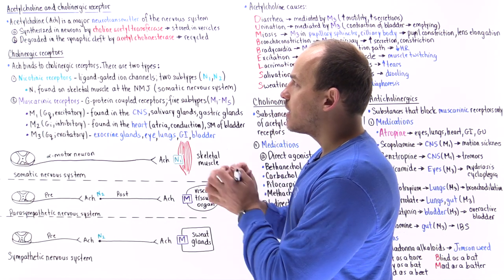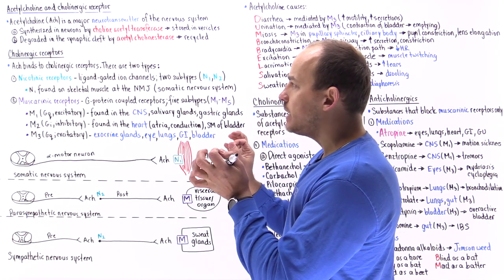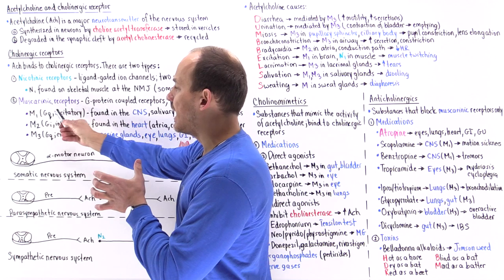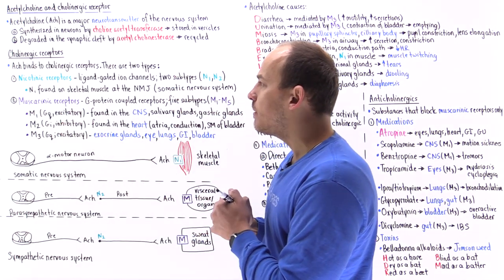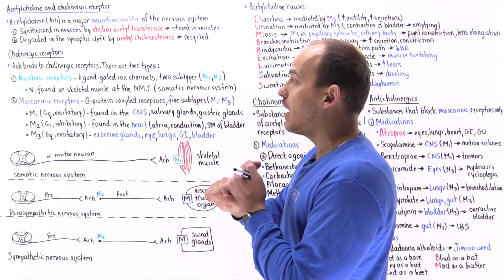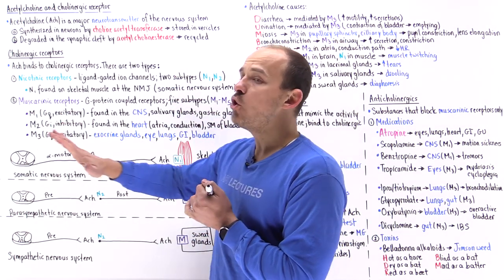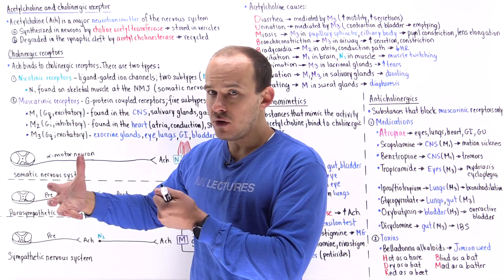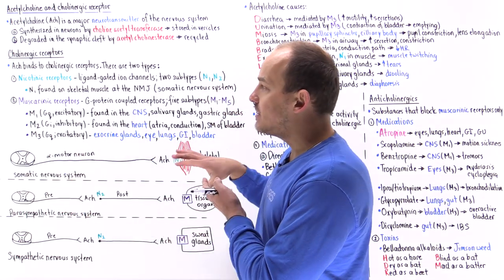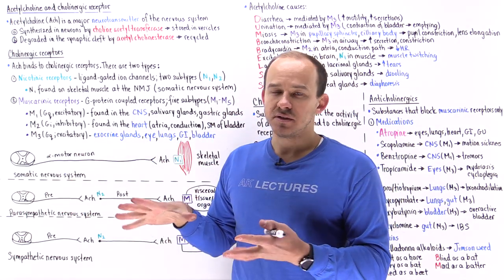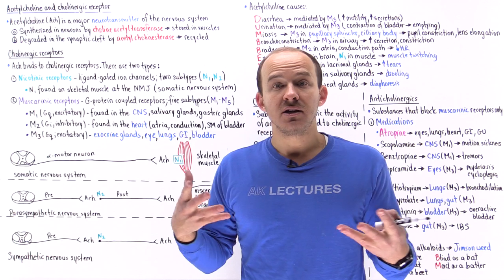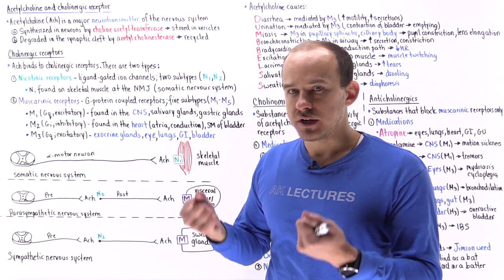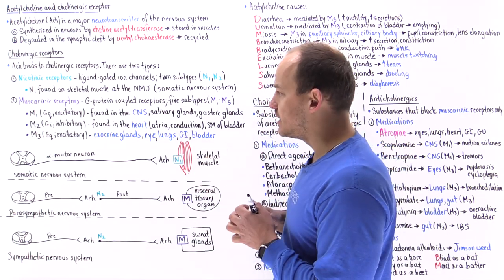Summarizing so far: acetylcholine, which uses nicotinic and muscarinic receptors, is used predominantly by the somatic nervous system to help us move, and by the parasympathetic nervous system to maintain homeostasis of the organs and tissues in the body.